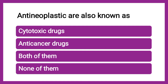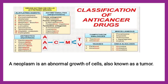Next question: Antineoplastics are also known as — cytotoxic drug, anti-cancer drug, both, or none. The correct answer is both. Neoplasm is an abnormal growth of cells (tumor), so antineoplastics are anti-tumor agents. They are called anti-cancer because cancer is the disease name. They are called cytotoxic because they are toxic to abnormally grown cells. Antineoplastic, anti-cancer, and cytotoxic drugs are all one and the same.